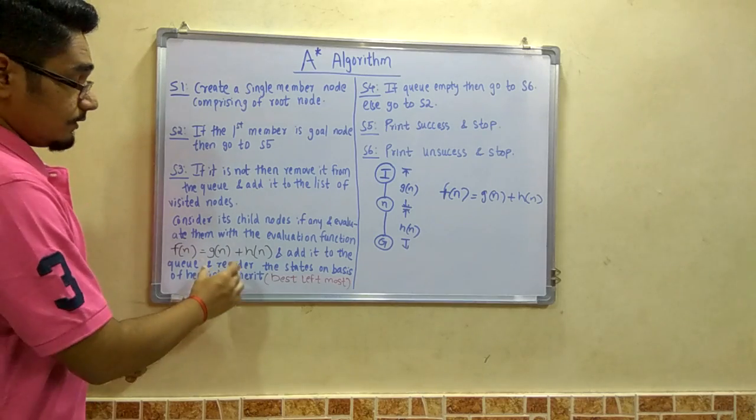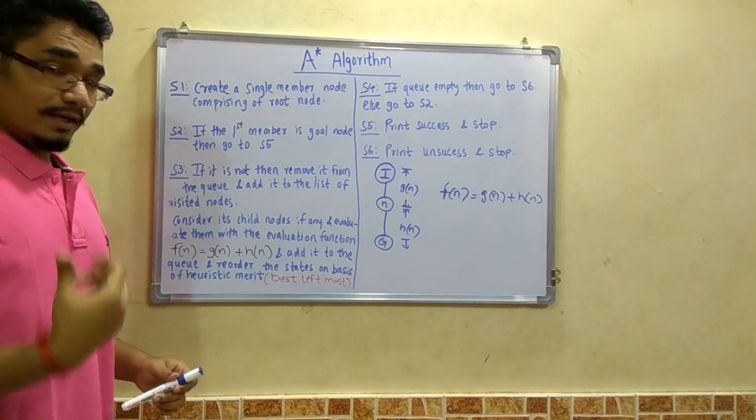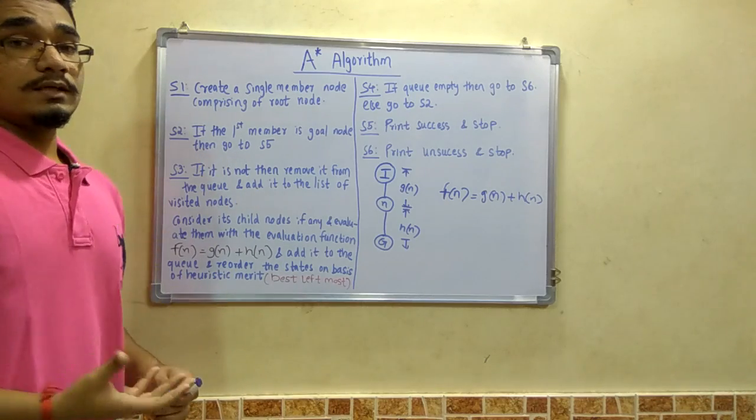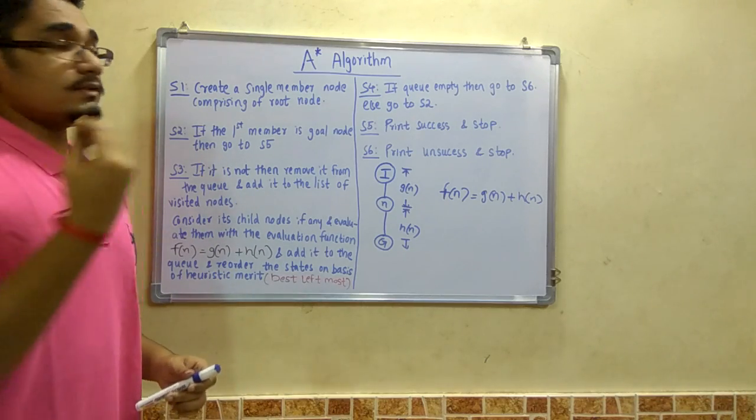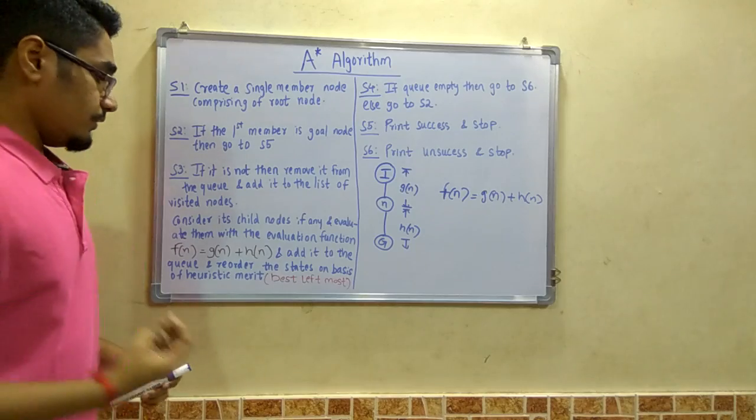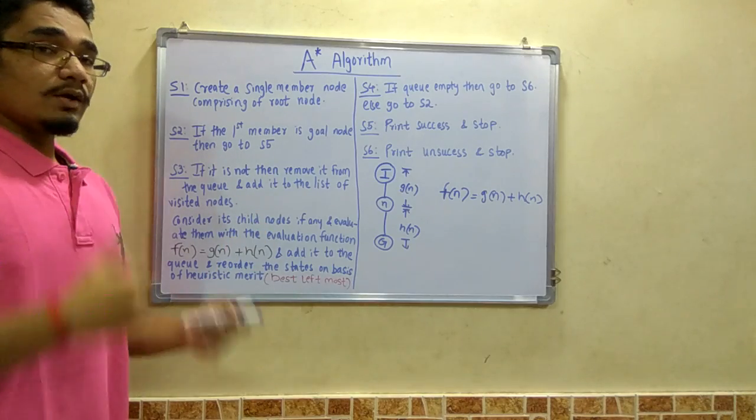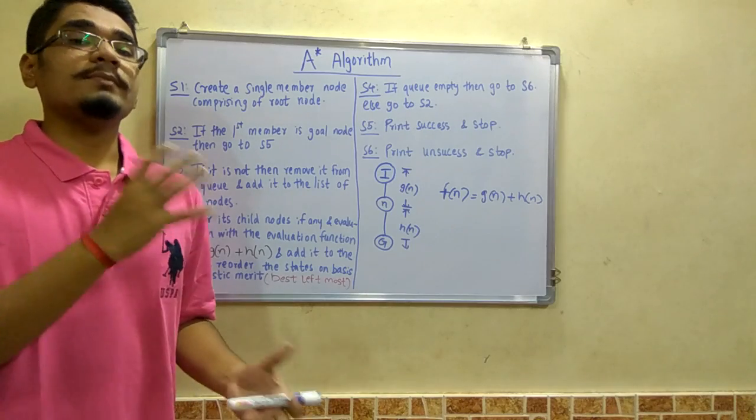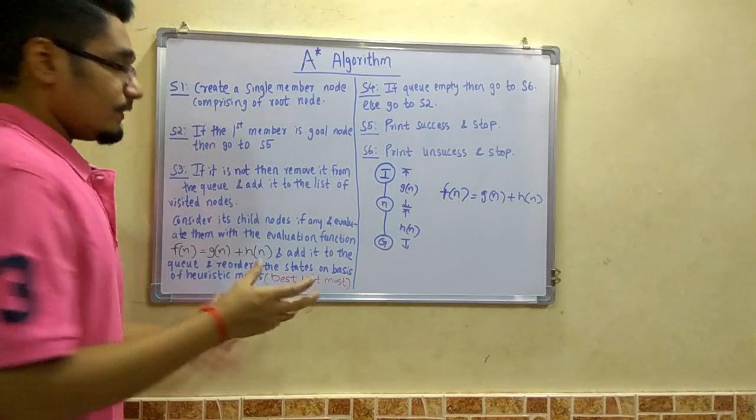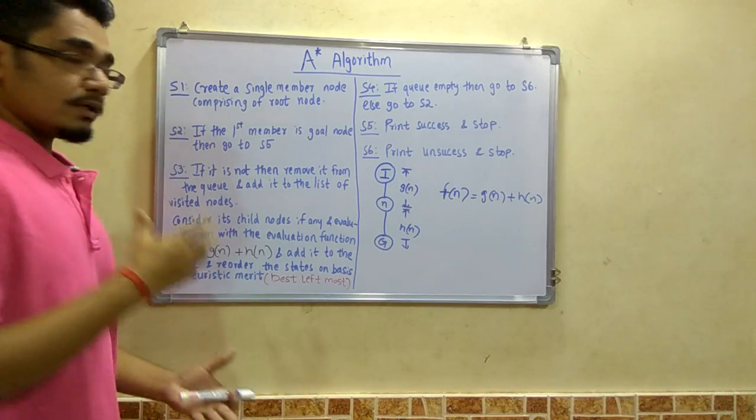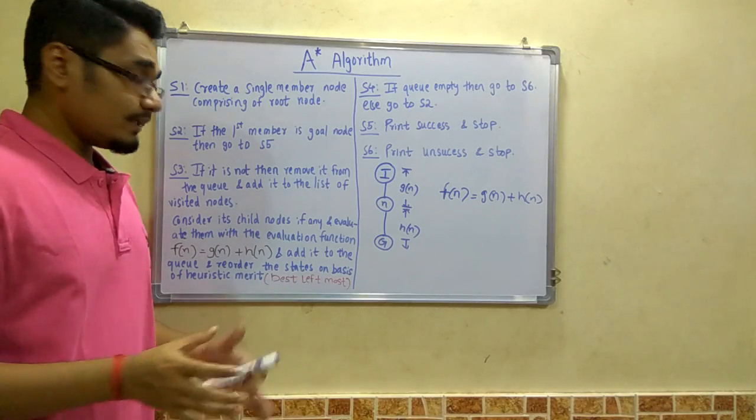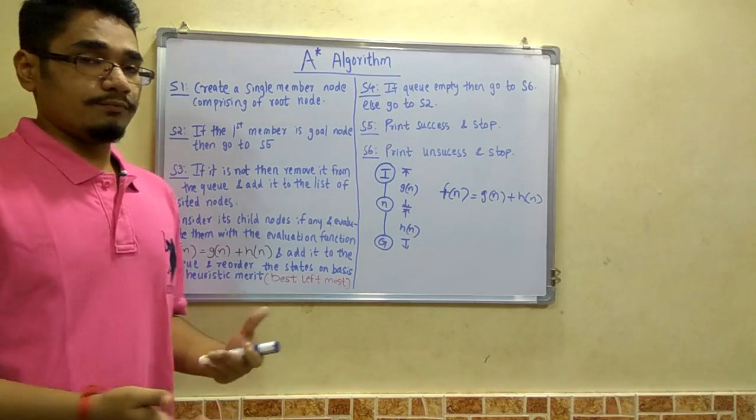Make sure to reorder the states as per the heuristic merit. Since A star is admissible, we will reorder the states not like in best first search, which uses decreasing order. We will reorder based on heuristic merit, which means best leftmost.